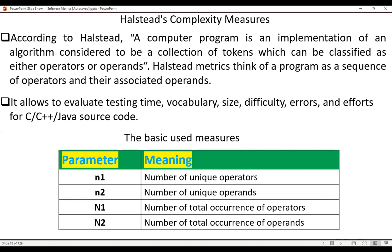Halstead metrics think of a program as a sequence of operators and their associated operands. It allows to evaluate testing time, vocabulary, size, difficulty, errors, and efforts for C, C++, Java source code.